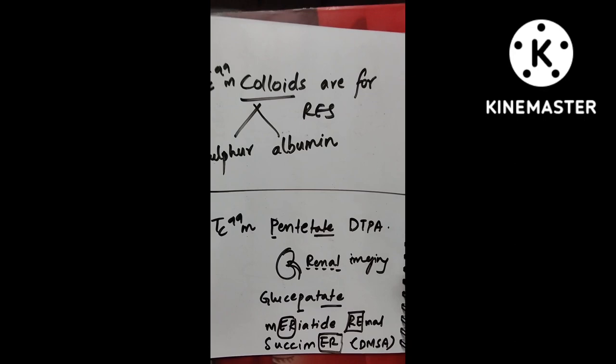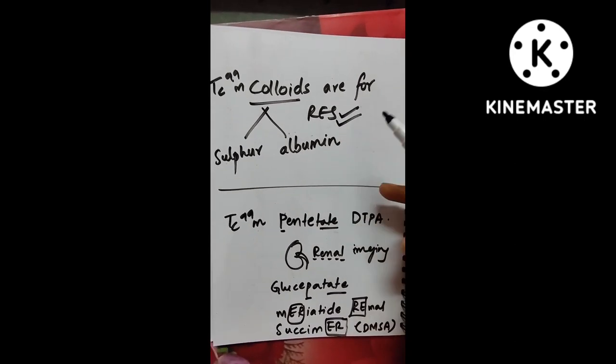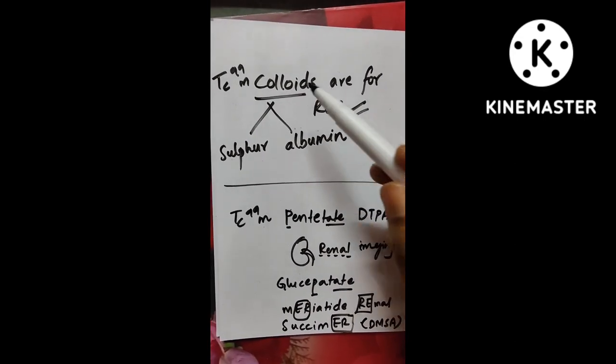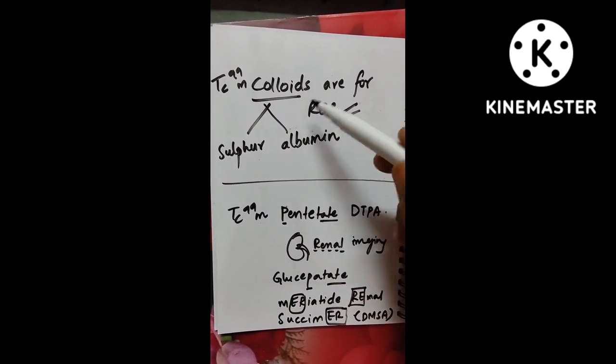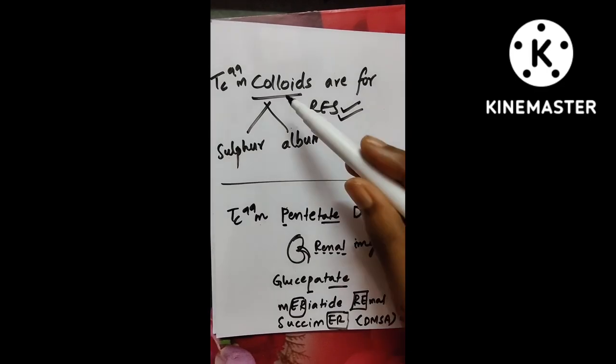Now comes the next one. For reticuloendothelial system, for reticuloendothelial system, you use colloids, okay? So different types of colloids, sulfur colloid and albumin colloid. We use for reticuloendothelial system, colloids.